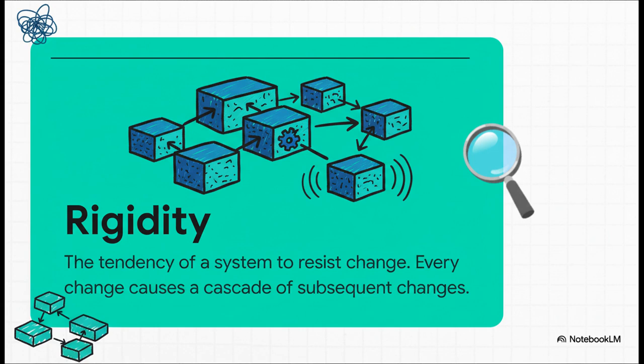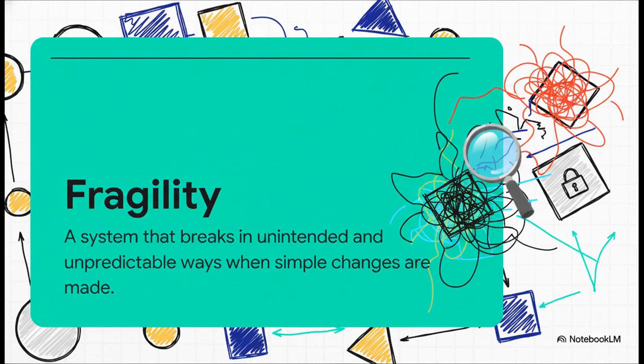For a business, this is where budgets get blown and deadlines get missed. And then there's the second symptom, which is even more terrifying. That's fragility. This is when you fix one bug over here, and suddenly two brand new, totally unrelated bugs pop up over there. The system is so tangled up that any change can cause these disastrous side effects. You end up playing this endless game of whack-a-mole with bugs, and you lose your user's trust with every single update.